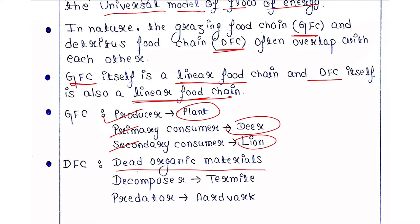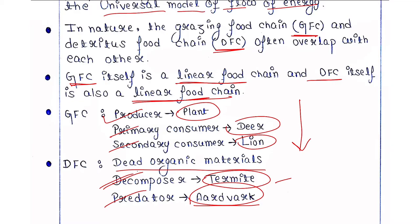In the DFC, the food chain starts from dead organic materials. Decomposers such as termites feed on and decompose this dead organic material. The predator, aardvark, eats the termites. So in the DFC, nutrition and energy is passed from dead organic materials to aardvark, making it a straight or linear food chain.